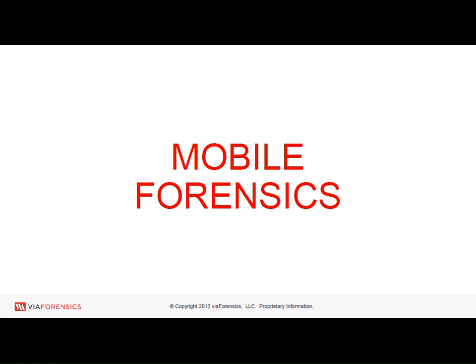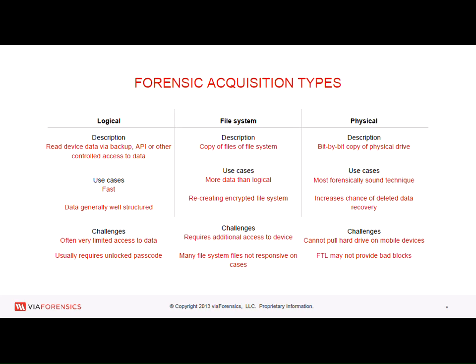Via forensics — we started out as a forensics company and it's still a big core part of what we do. There are three different ways that forensic folks pull data off of devices. Back in the day with computers, it was pretty straightforward — pull out the drive, attach a write blocker, dump the data, and analyze it. In mobile phones, pulling the drive is a lot harder — you've got to do chip-off, re-ball it, maybe do some JTAG work. It's really complicated.